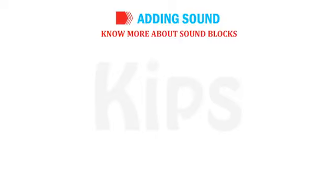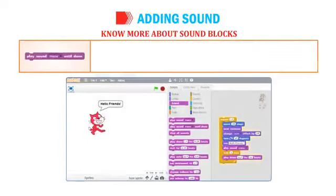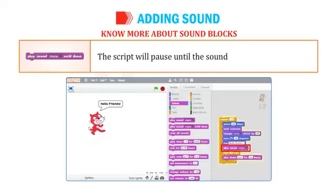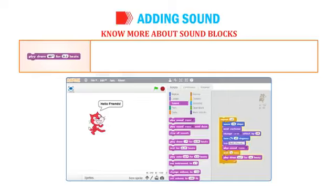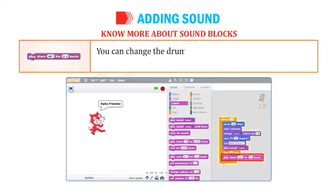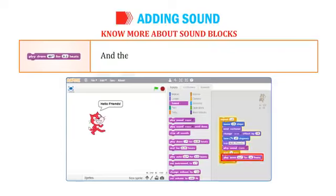Play Sound Meow Until Done: this block plays the specified sound; the script will pause until the sound has finished playing. Play Drum 48 for 0.2 Beats: this block plays a drum sound for a specified number of beats. You can change the drum type using the drop-down arrow and the number of beats by changing the value in the box.